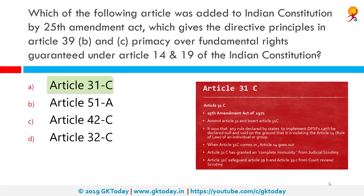The correct answer is Article 31C. The 25th Amendment of the Constitution in 1971 added a new clause, Article 31C, to the Constitution. This was a drastic change. The avowed objective underlying Article 31C was to usher in the country, at an early date, the era of a socialist pattern of society.